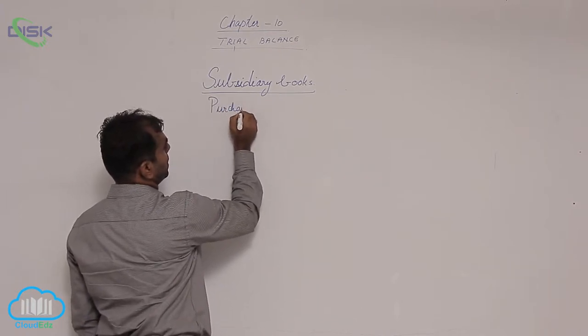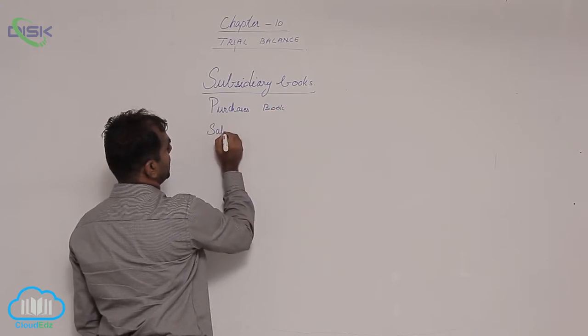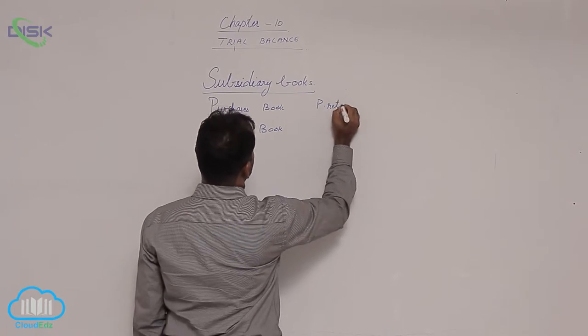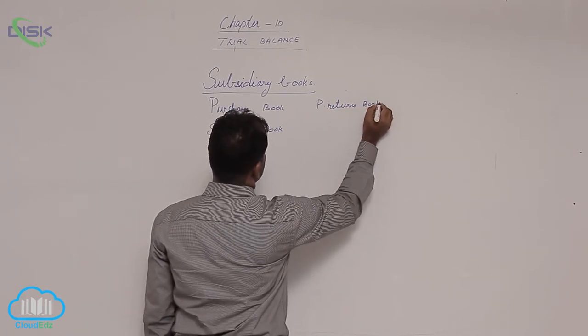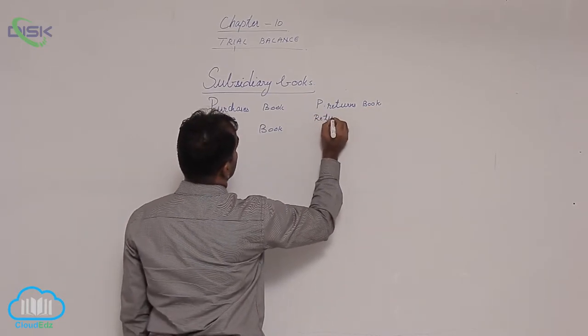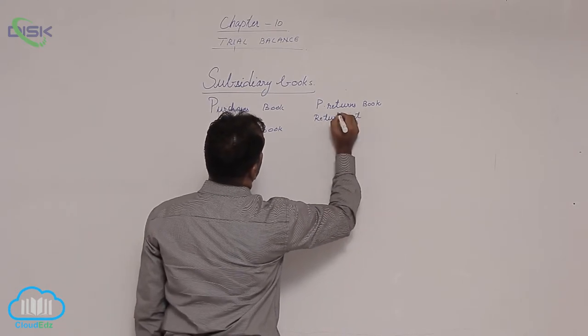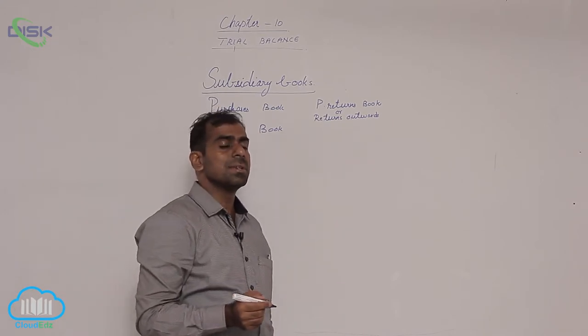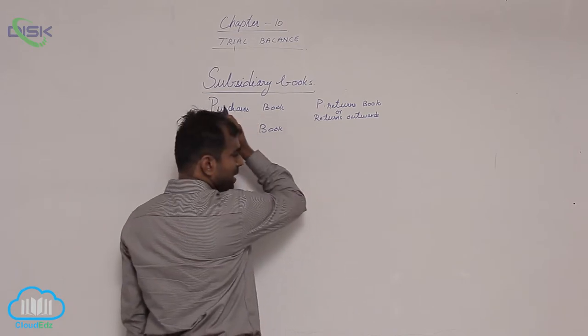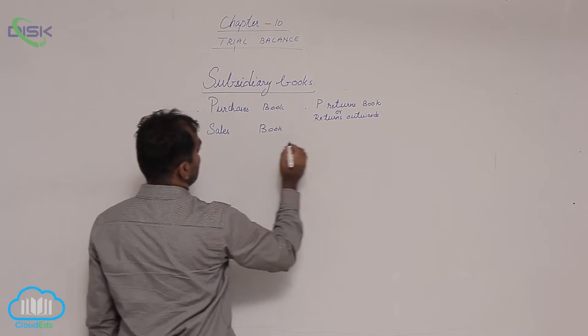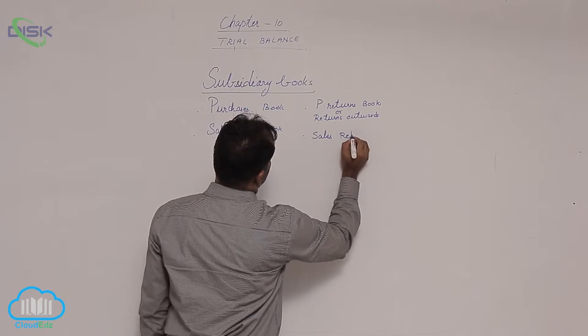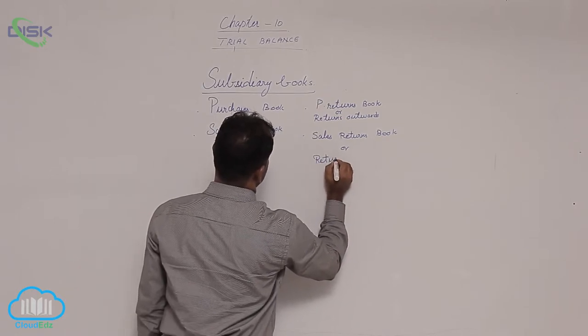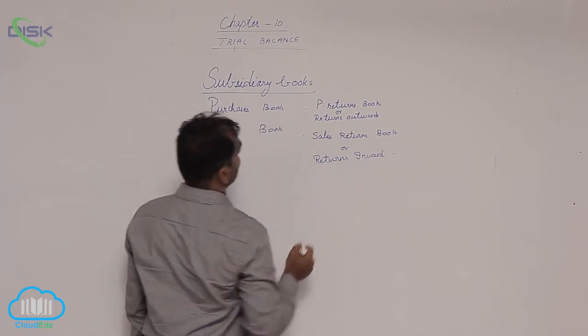We have Purchases book, then we have Sales book, then we have Purchase Returns book, which is also called Returns Outward or Returns Outwards, Returns to Creditors, or Returns to Suppliers. Then we have Sales Returns book which is also called Returns Inward book.